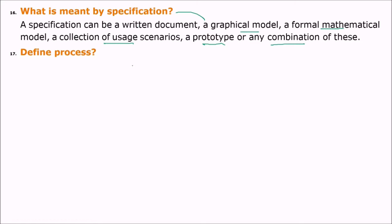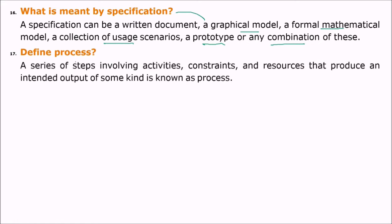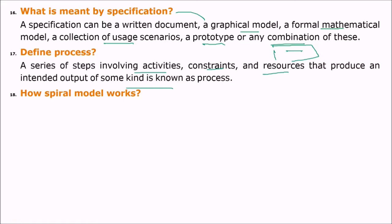Define process. A process is a series of steps involving activities, constraints, and resources that produces an intended output of some kind. Processes involve all activities with some input and output with certain constraints and resources.